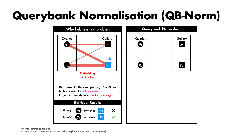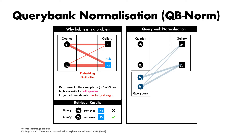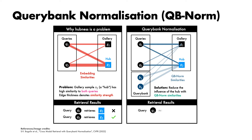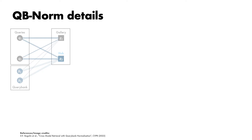In addition to the gallery and queries considered previously, we will assume access to some additional set of samples called a query bank. The key idea is to first use the query bank to probe which gallery samples might potentially be hubs by calculating their similarities, here referred to as QB norm similarities. Since G2 is a hub, it is likely to have high similarity with the query bank as well as with the original queries. We then perform a normalisation step using the QB norm similarities, which recalibrates the original similarities in a way that accounts for the hub. As a result, query Q1 now retrieves gallery sample G1 and query Q2 retrieves gallery sample G2.